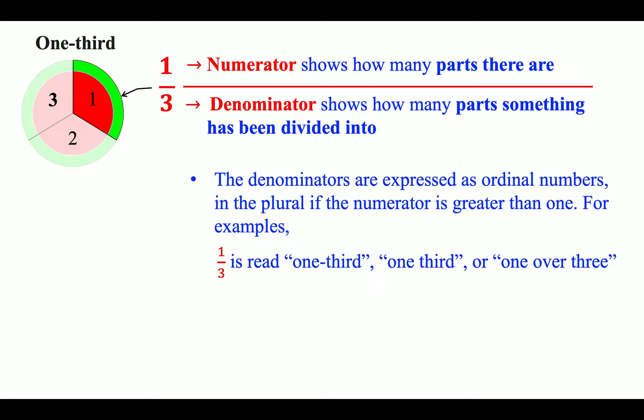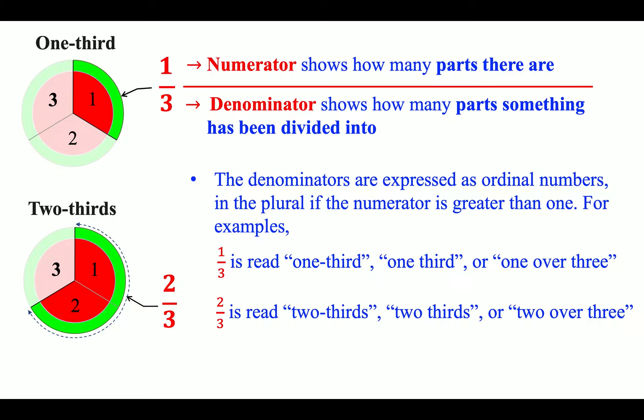The denominators are expressed as ordinal numbers, in the plural if the numerator is greater than 1. For examples, 1 slash 3 is read one-third, one third, or one over three. 2 slash 3 is read two-thirds, two thirds, or two over three.